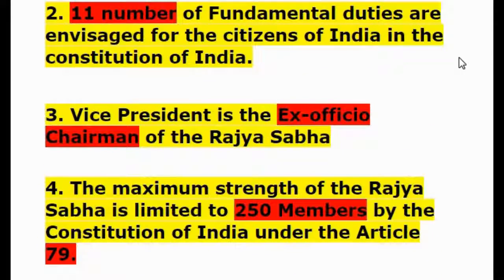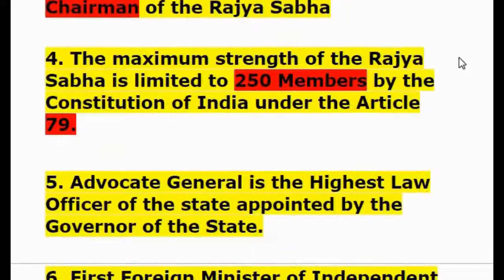Question 3: The Vice President is the ex-officio chairman of the Rajya Sabha. Question 4: The maximum strength of the Rajya Sabha is limited to 250 members by the Constitution of India under Article 79.